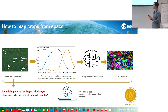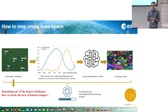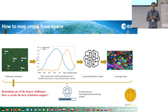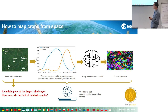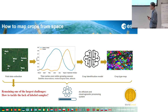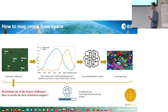The basics of how we map crops from space: we start from known locations of crops in the field. Based on these, we train crop identification algorithms that, once trained, are applied at scale to produce actual crop type maps. The problem already starts in that first part, and that's really still the biggest bottleneck to date — there is still a huge lack of labeled samples on crop type information.